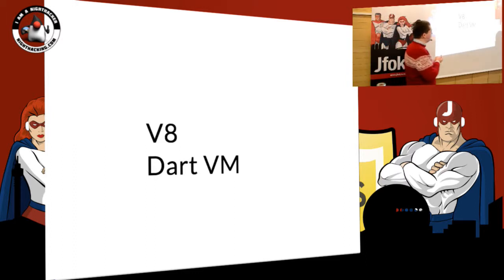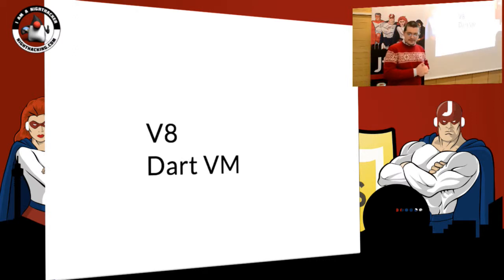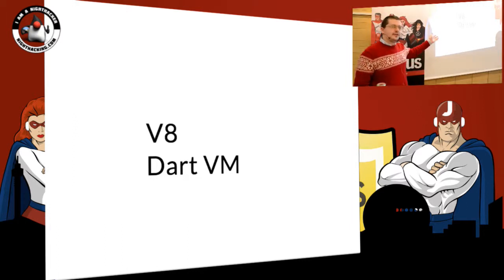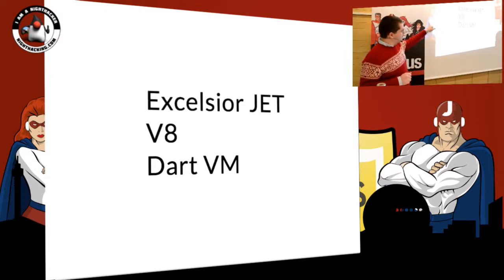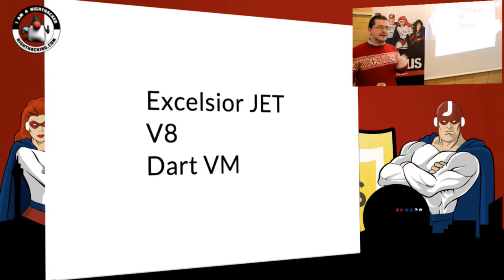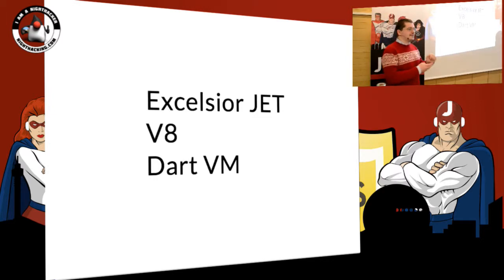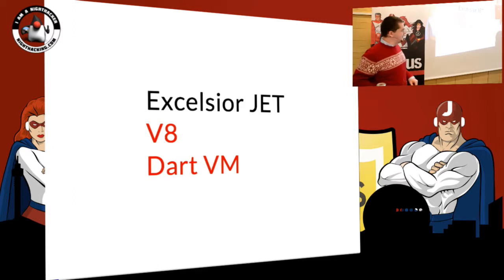I am basing this talk on my experience working on V8, which is a JavaScript engine, and on the Dart VM. Dart, for those who don't know, is like Java on the outside, Smalltalk on the inside — kind of. Before working on these two VMs for dynamically typed languages, I worked at a company called Excelsior doing an ahead-of-time compiler for Java. I managed to escape before Lambda forms and all the method handle fun came in, because compiling that ahead of time is very pleasant, I suspect.